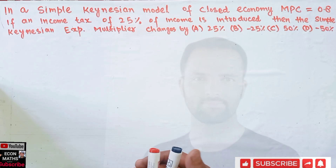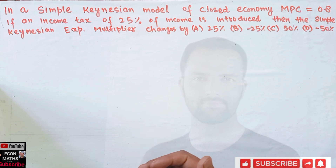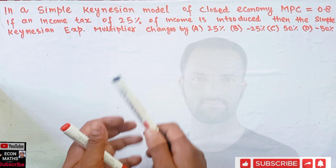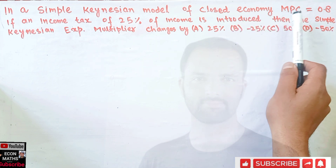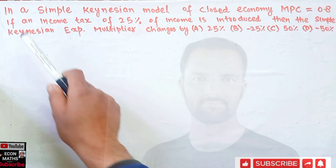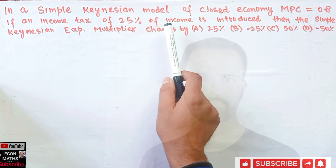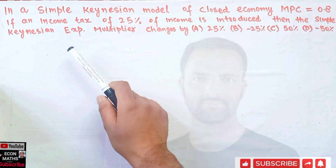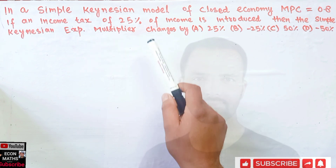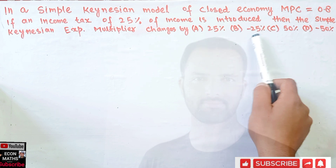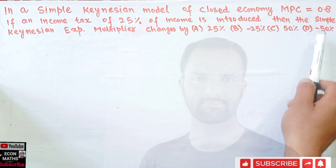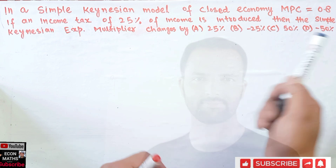Hi, this is Halal. In this video on mathematical economics series, we will try to solve a problem that was asked by a brother Shaquille Shaikh regarding the simple Keynesian model. The question is: in a simple Keynesian model of closed economy, our marginal propensity to consume is 0.8. If an income tax of 25% of income is introduced, then the simple Keynesian expenditure multiplier changes by — the options are 25%, minus 25%, 50%, or minus 50%.